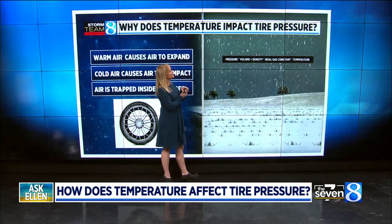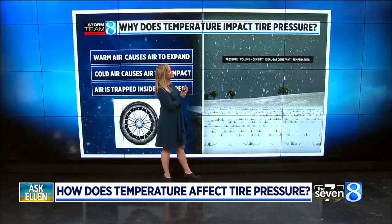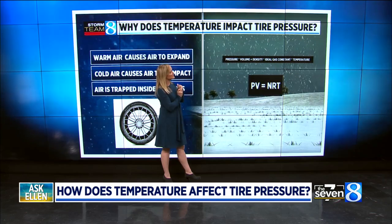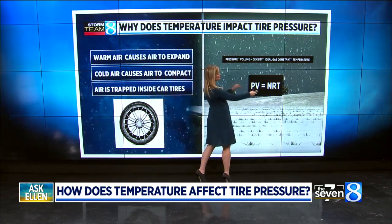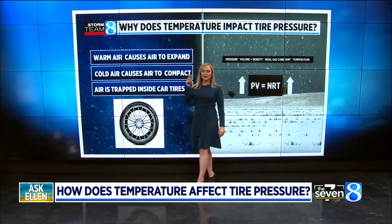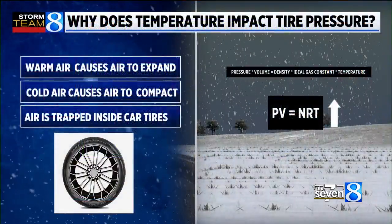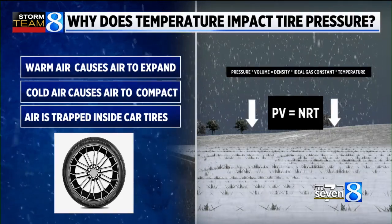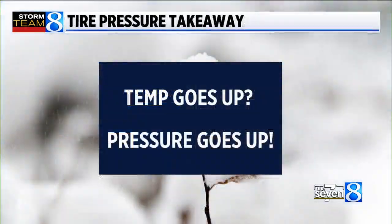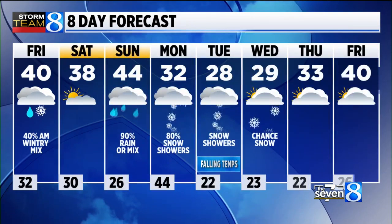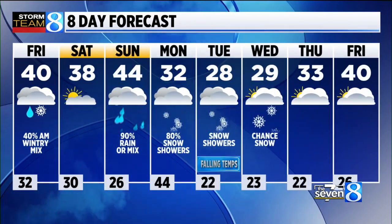The ideal gas law is pressure times volume equals density times the ideal gas constant times temperature. Basically, we have two sides of the equation — volume on one, temperature on the other. When one goes up, the other goes up. When one goes down, the other goes down. And that really is the simplified version: if the temperature goes up, your pressure goes up; if the temperature goes down, the pressure goes down. And that's all you really need to know.